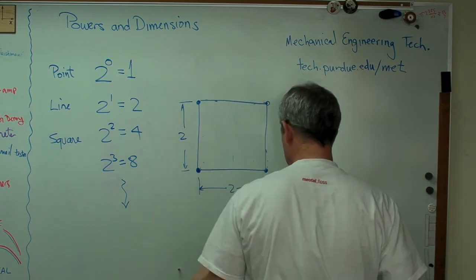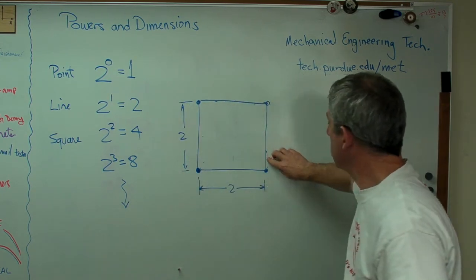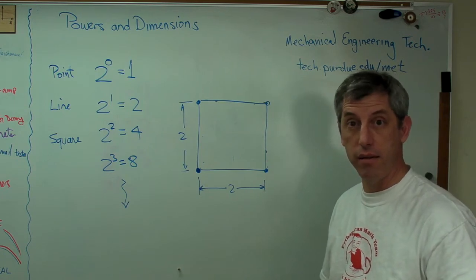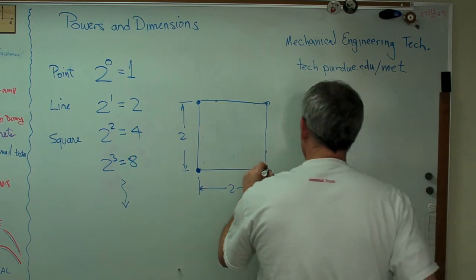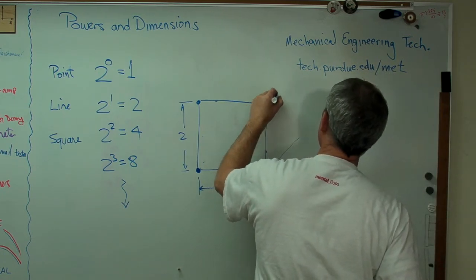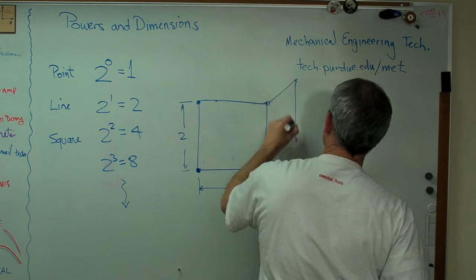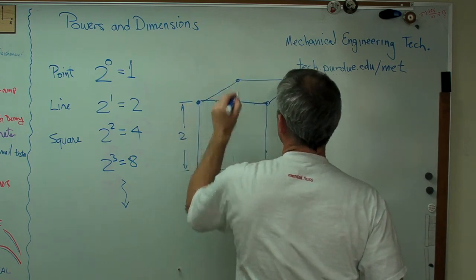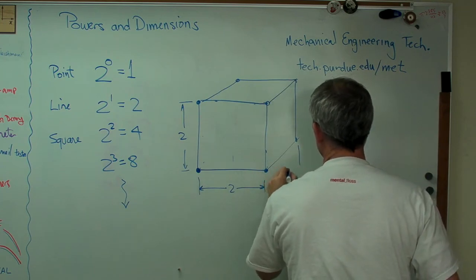But what if I go one more dimension? If I extend this one more dimension, what do I get? I get a cube. Well let's just extend this back. Okay? And let's say that's also two.